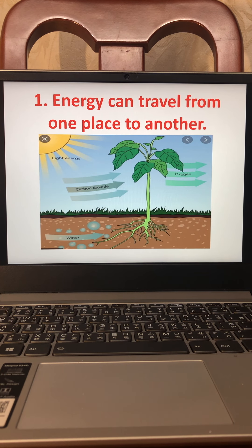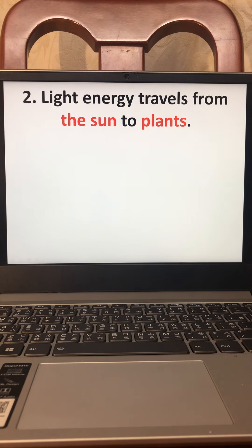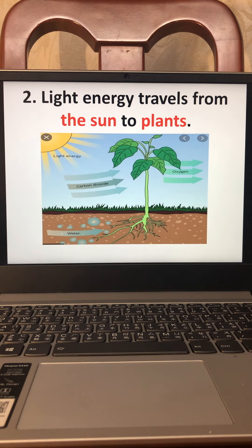Carbon dioxide moves with the air — that's how energy can travel from one place to another. Let's look at another example: light energy travels from the sun to plants. We've just spoken about it, just so that we do not forget. Light energy travels from the sun to plants.